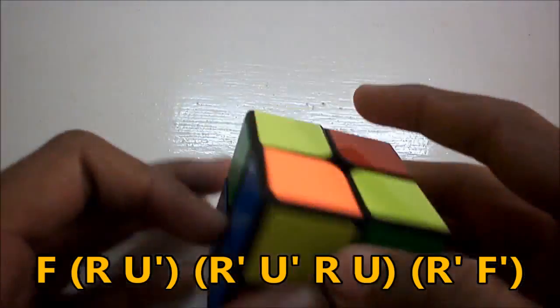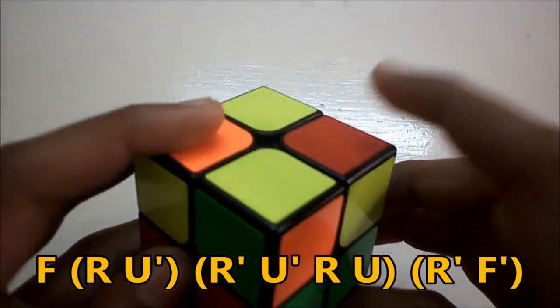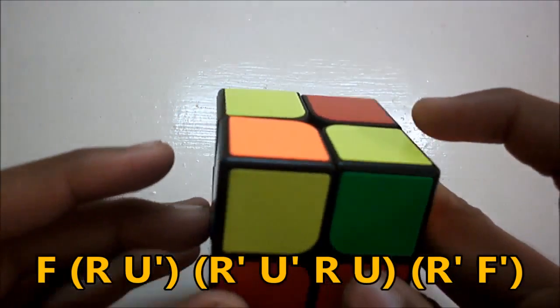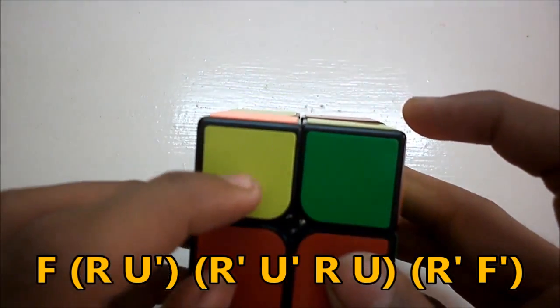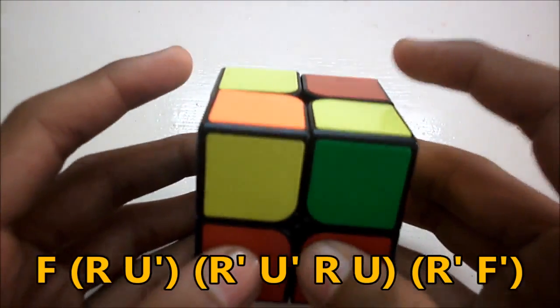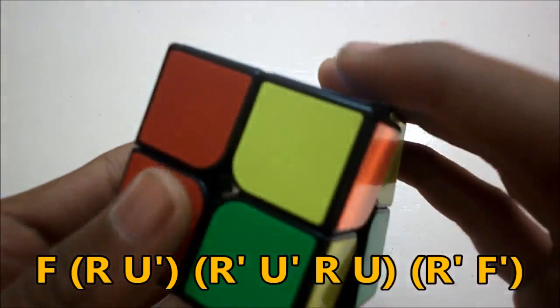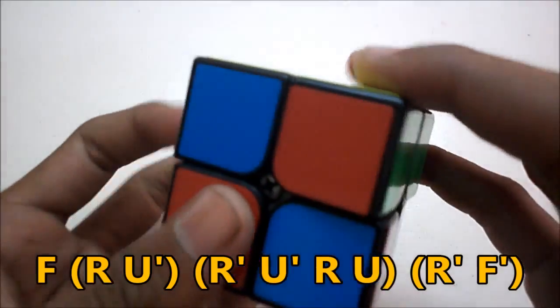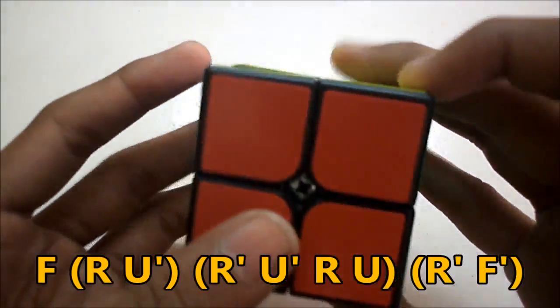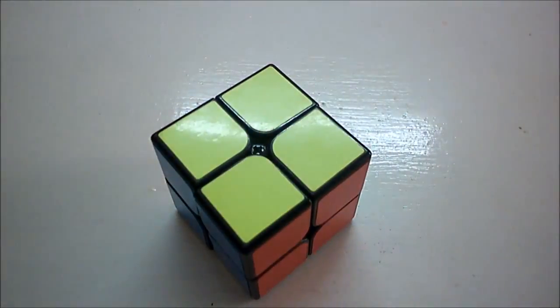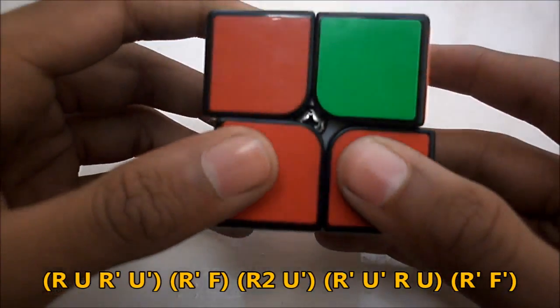So the last OLL case is when you have these two pieces solved and you're trying to flip these two pieces. So holding the cube like this with this corner on the left facing you, perform the algorithm F R U' R' U' R U R' F' and that solves it.